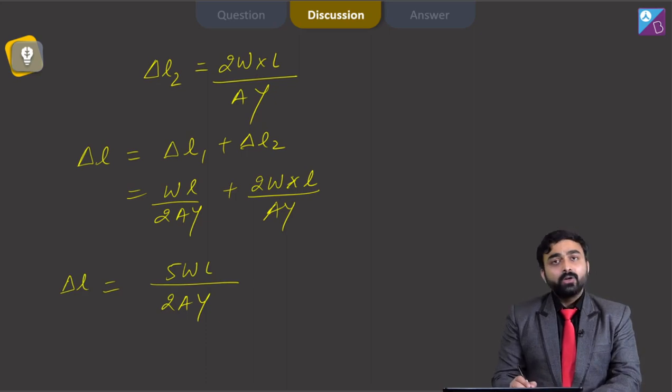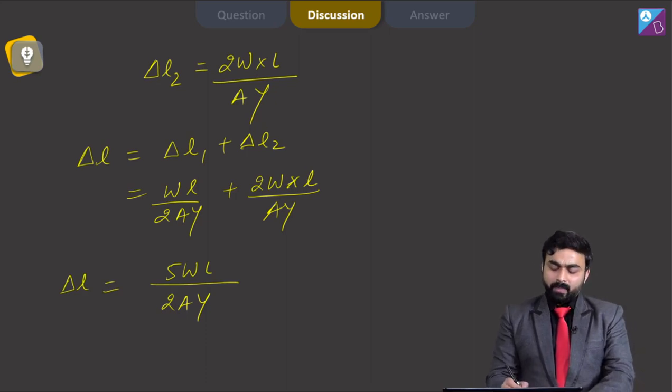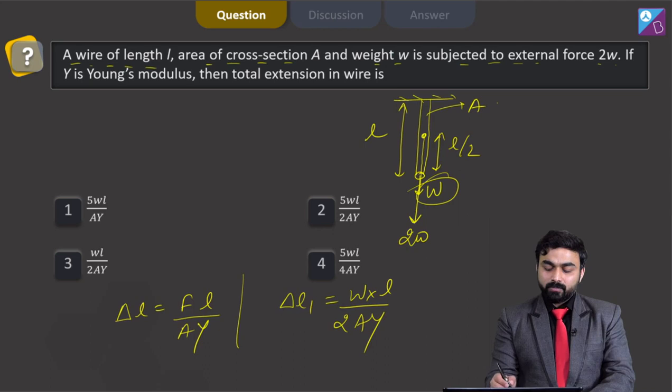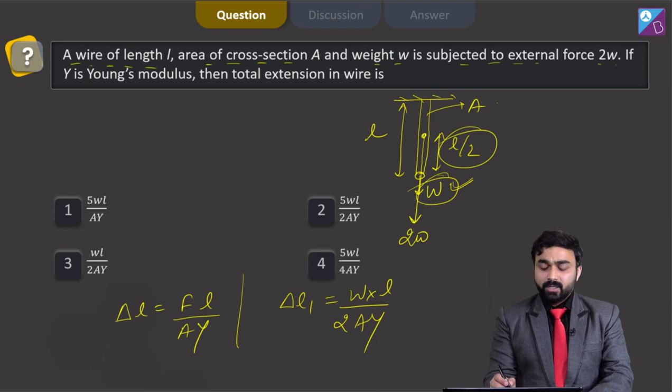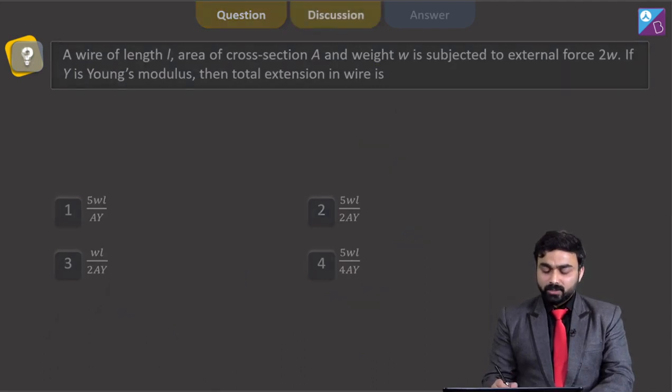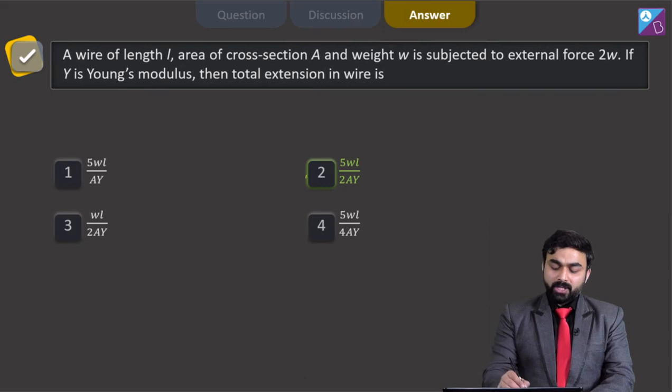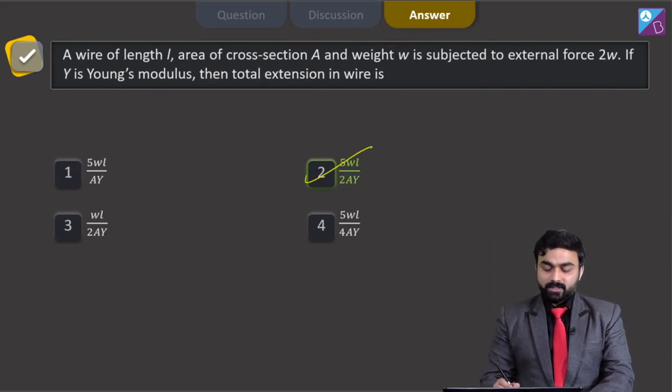This would be my total elongation in wire. In this particular question, the catch was just the length L by 2. You just need to think that this particular weight is acting at the center mass of the wire. So option number 2 is the correct answer here.